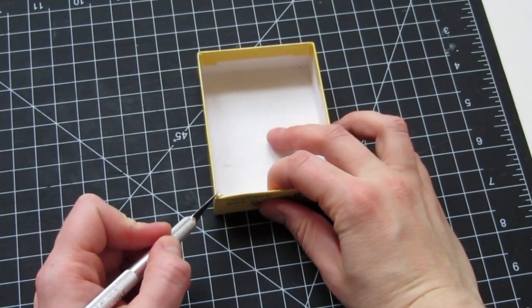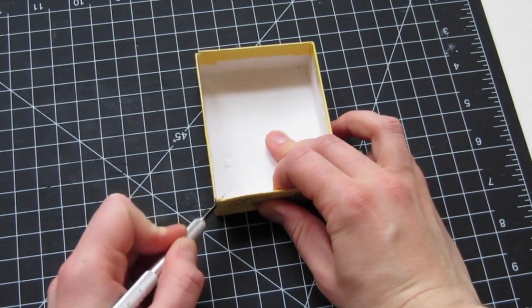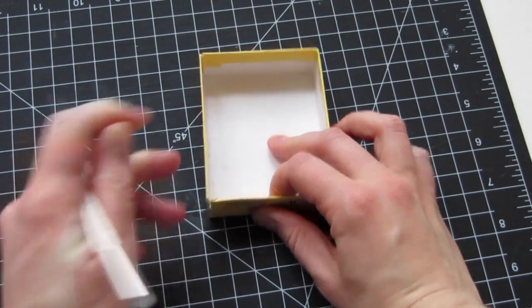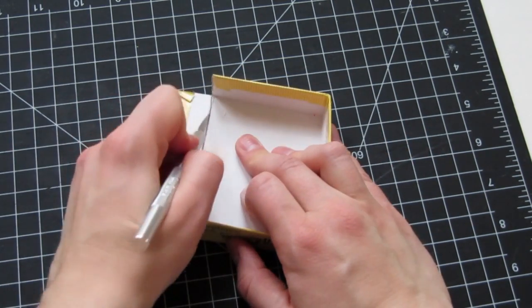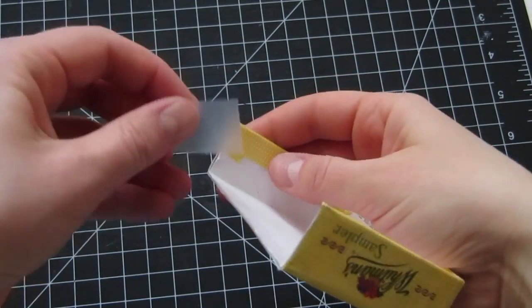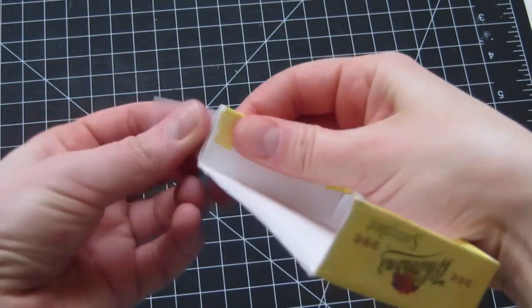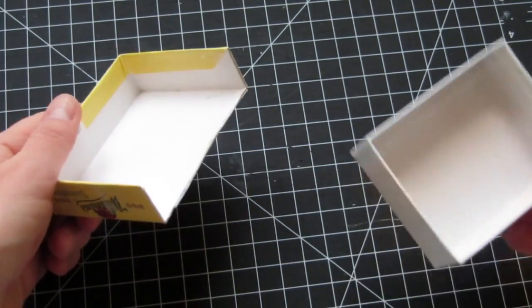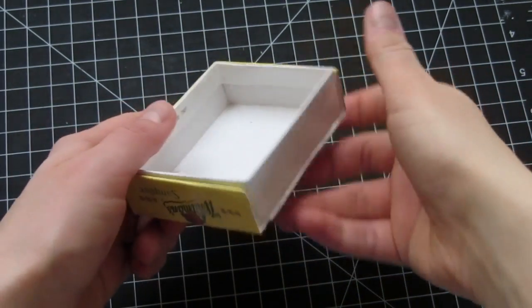Start by cutting off one edge of your box top. Cover the cut edges with scotch tape. Test fit your drawer into the box top.